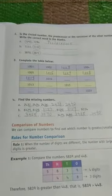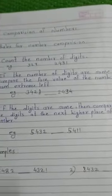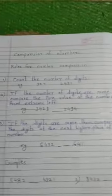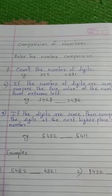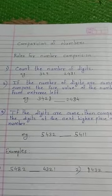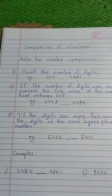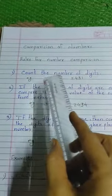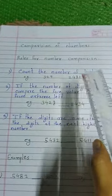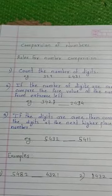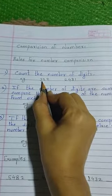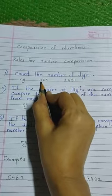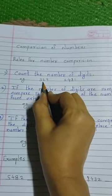For better understanding, we will look at comparison of numbers using a few rules. The rules for number comparison — the very first rule is: count the number of digits. In this first example, one, two, three — there are three digits.